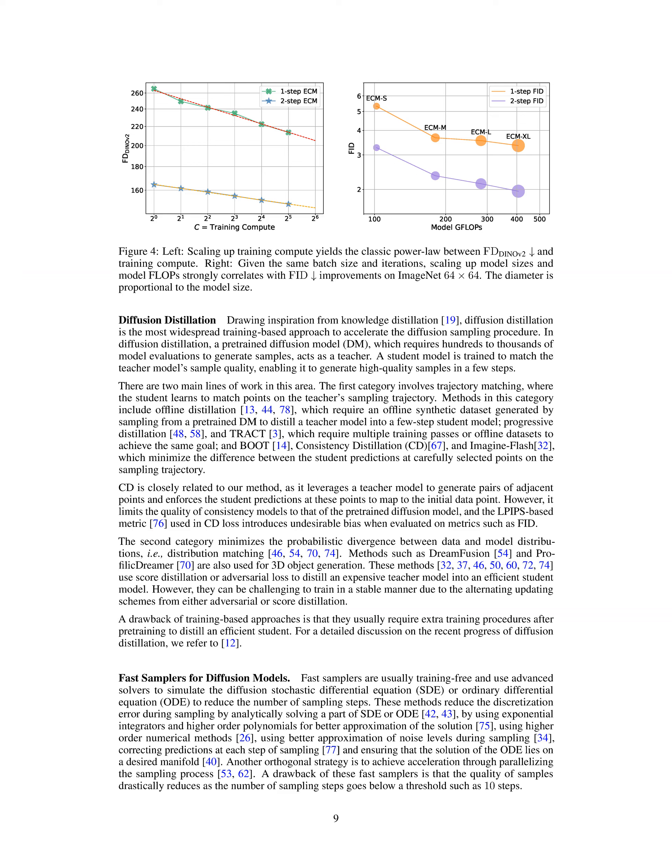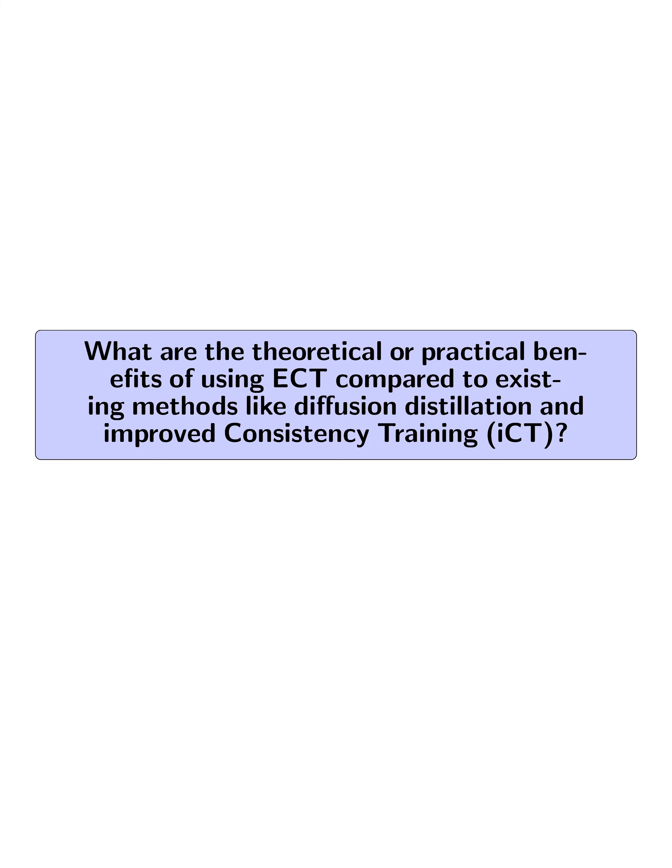Overall, ECT provides a simple and principled approach to efficiently train CMs to meet the consistency condition, resulting in high-quality sample generation in one or two sampling steps. What are the theoretical or practical benefits of using ECT compared to existing methods like diffusion distillation and improved consistency training, ICT?